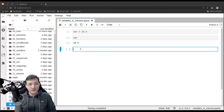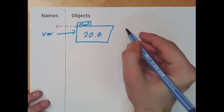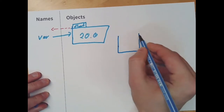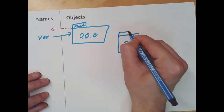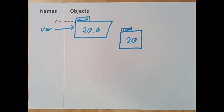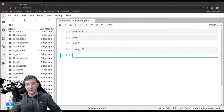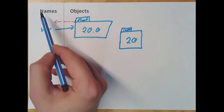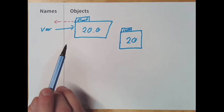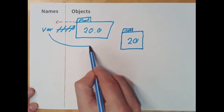Let's continue and assign to the variable var the number 20 as an integer. If we execute the cell, what happens in memory is we execute the right-hand side first — Python creates somewhere in memory a new object with the number 20 in it, and the object is of type int. So far, nothing else has happened to the 20.0 object. That is important — we now have two objects in memory. Now the left-hand side is evaluated: we assign to the name var. Python looks up whether the name var already exists, and the answer is yes. So Python will simply remove the reference and then create a new reference going to the new integer object.